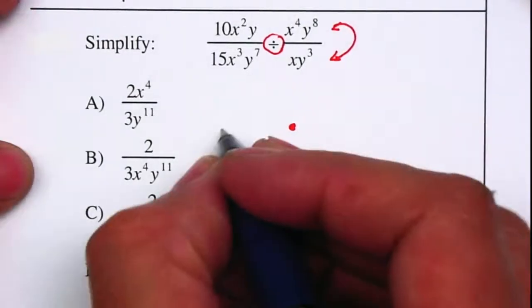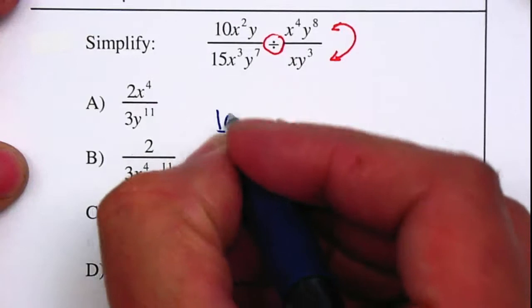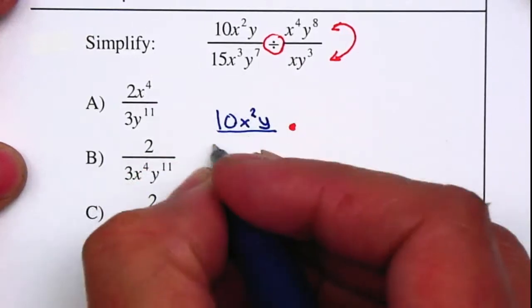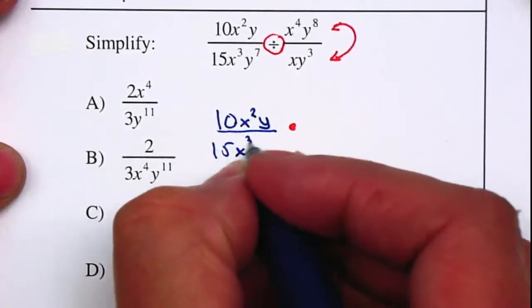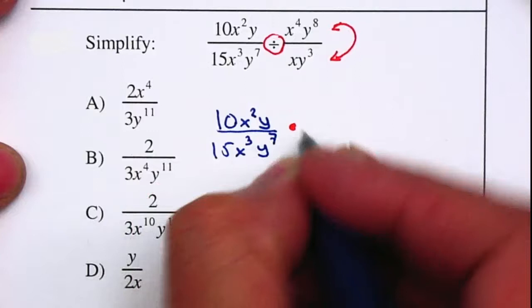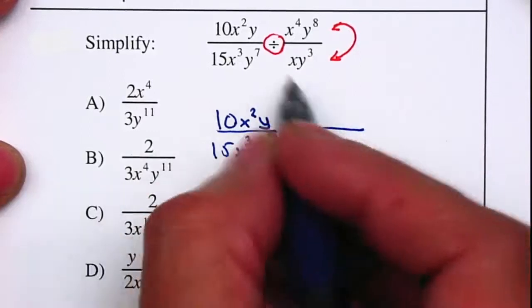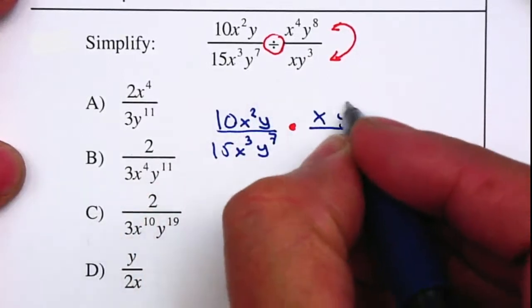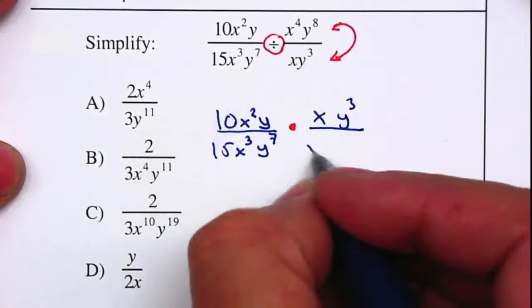The first fraction will stay exactly the same. 10x²y, 15x³y⁷. The second fraction, we're going to take the reciprocal, so your denominator becomes your numerator, and your numerator becomes your denominator.